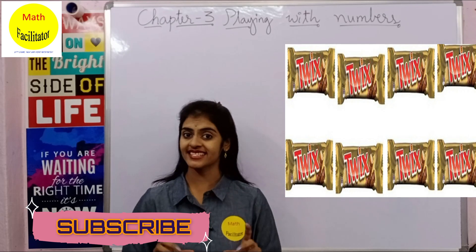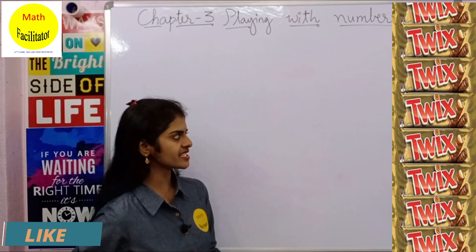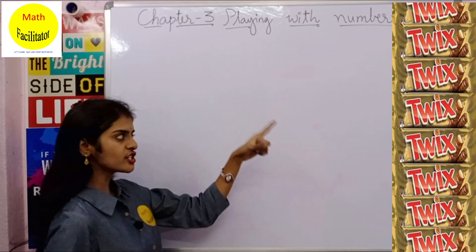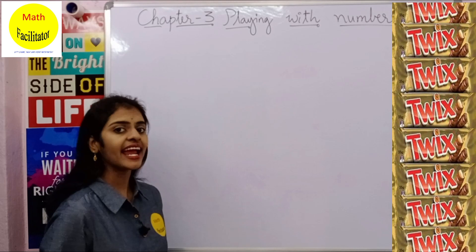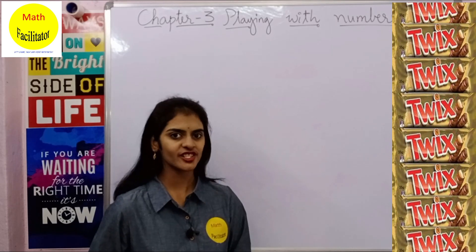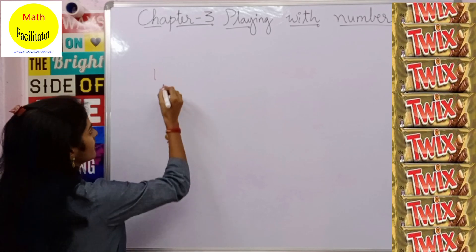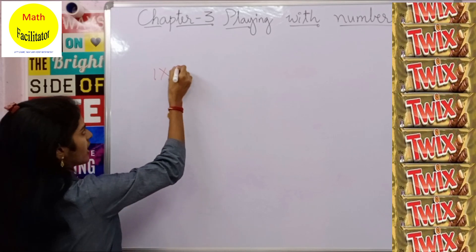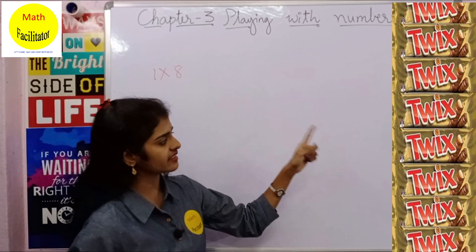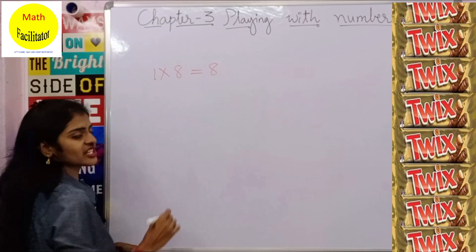You have to arrange 8 chocolates in such a way that each row contains the same number of chocolates. These are the possible arrangements. In the first arrangement, 8 chocolates are arranged in 8 rows, and each row contains 1 single chocolate. So you arranged 1 chocolate in each row, giving 8 rows. Can I write it as 1 into 8? Yes, this is 8 chocolates.